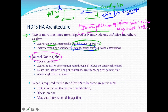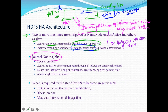The active name node writes the edits log into the journal nodes. Generally, there are three journal nodes running. The active name node writes into the majority of these journal nodes. The journal nodes make sure that only one name node is writing at any given time — the one who is active is the writer, and only one name node can write. This enforces that only one name node is active.